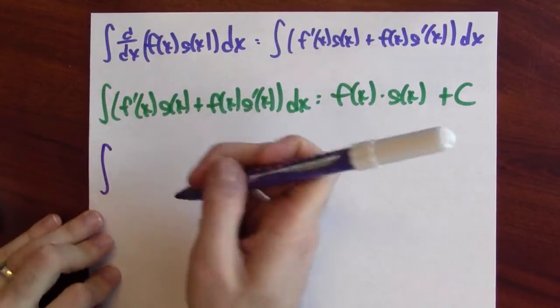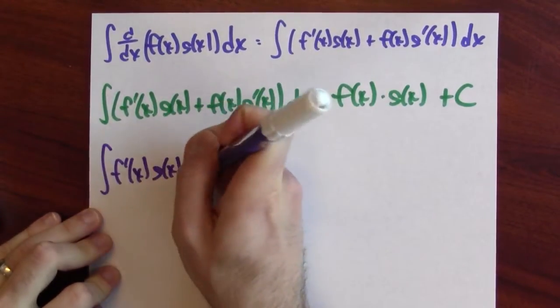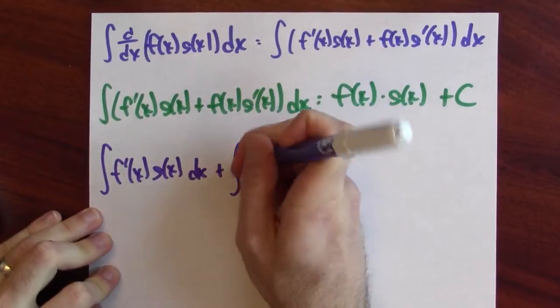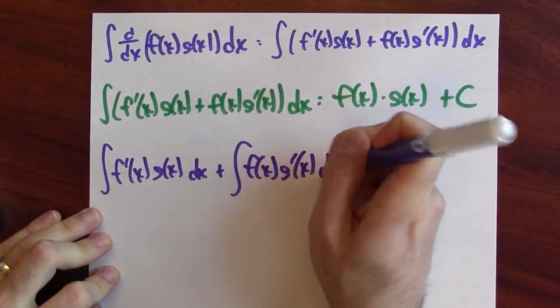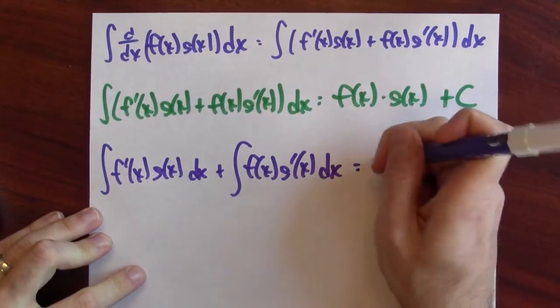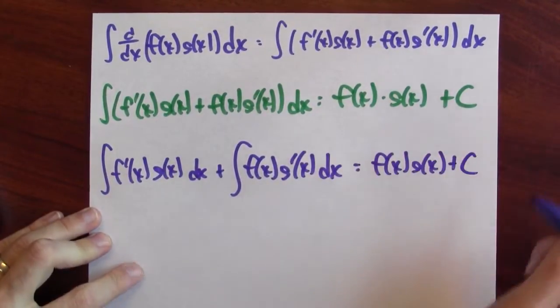That's the integral of a sum, so it's the sum of the integrals. So, integrating f′(x)g(x) dx plus the integral of f(x)g′(x) dx gives us f(x)·g(x) plus a constant. That's one very symmetric way of writing down the product rule in reverse.